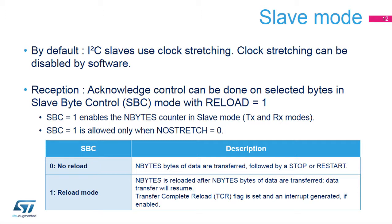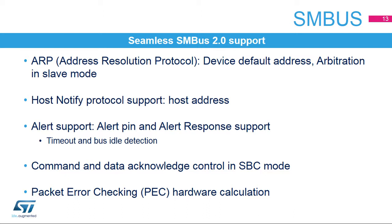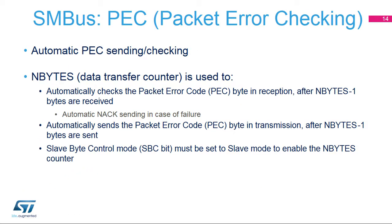In SMBus mode, Slave Byte Control Mode is used in transmission for sending the PEC or Packet Error Code byte. The I2C peripheral provides hardware support for the SMBus. The SMBus address resolution protocol is supported through the device default address and arbitration in slave mode. The Host Notify protocol is supported with host address support. The Alert protocol is supported through the SMBus alert pin and alert response address. The SMBus clock low timeout and cumulative clock low extend times can be detected with a programmable duration. The bus idle condition can be detected with a programmable duration. Command and data acknowledge control is supported through Slave Byte Control Mode. The Packet Error Code or PEC byte is calculated by hardware and automatically sent in transmission and checked in reception.